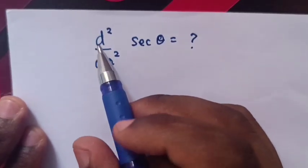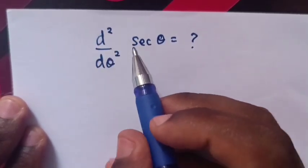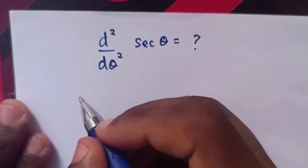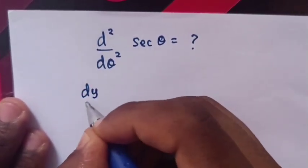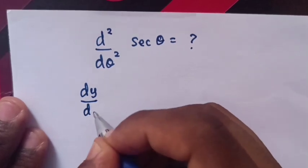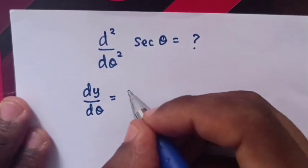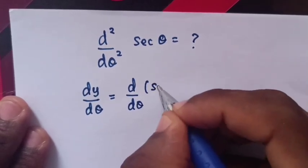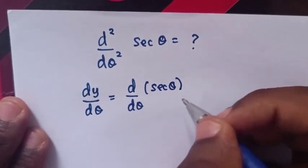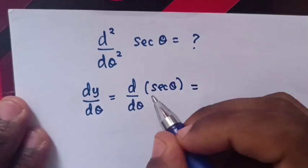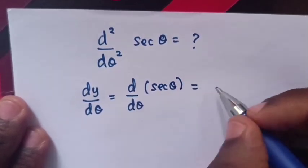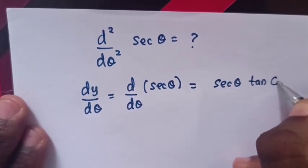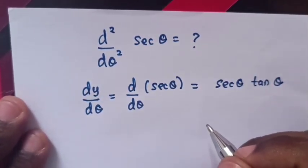Hello. How to solve d²(sec θ)/dθ²? First, we take the first derivative. dy/dθ is equal to d/dθ of sec θ. The derivative of sec θ with respect to θ is sec θ tan θ.